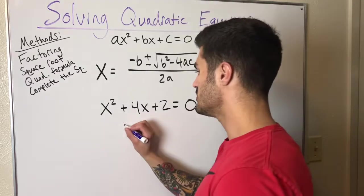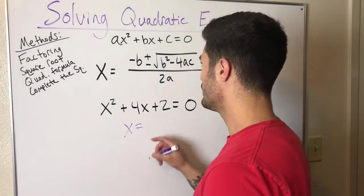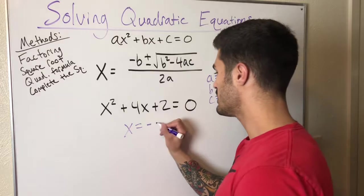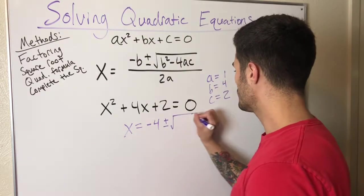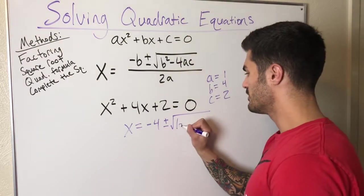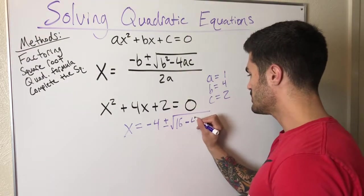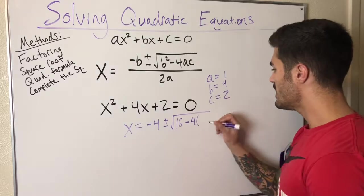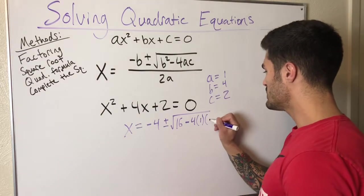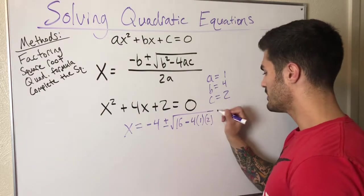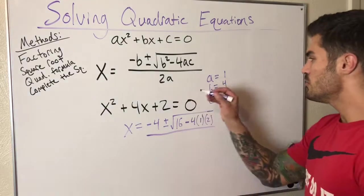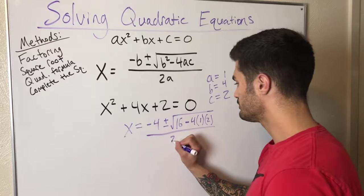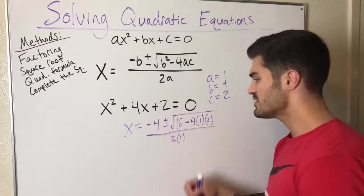Now I can just plug a, b, and c into my quadratic formula. x equals negative b, that's negative 4, plus or minus square root of b squared, that's 4 squared, that's 16, minus 4 times a, which is 1, times c, which is 2. 2a on the bottom, that's 2 times 1.